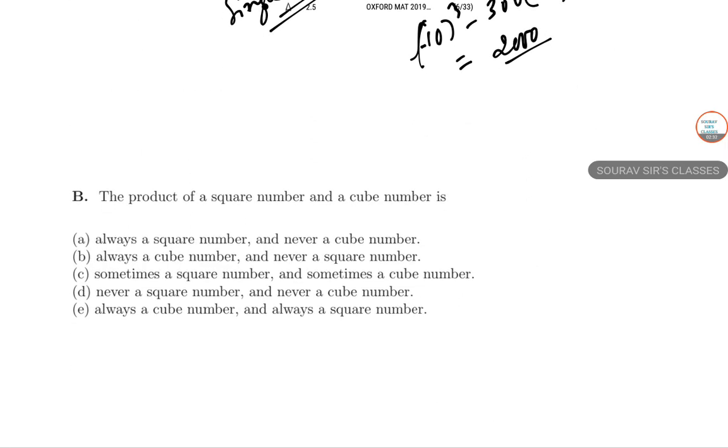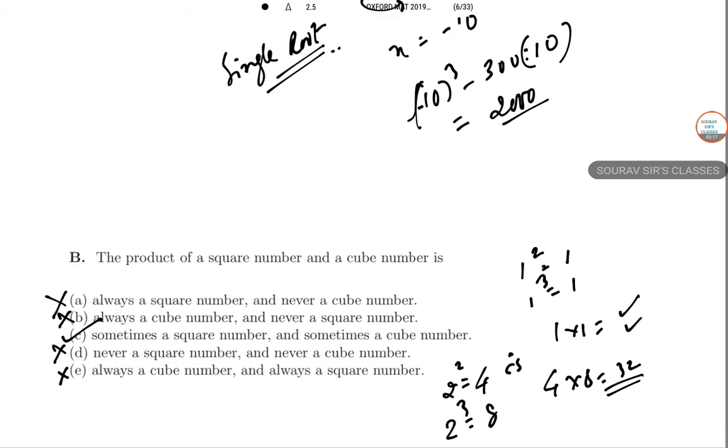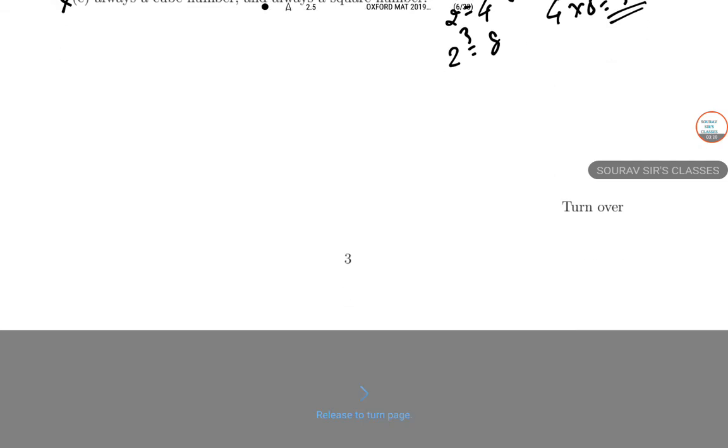Next, the product of a square number and a cube number. If I take the number 1, its square is 1 and its cube is also 1, so 1×1 = 1, which is both cube and square. If 2² = 4 and 2³ = 8, the product is 32, which is neither a square nor a cube. So there's no hard and fast rule. Always is wrong, sometimes is the only possible answer.